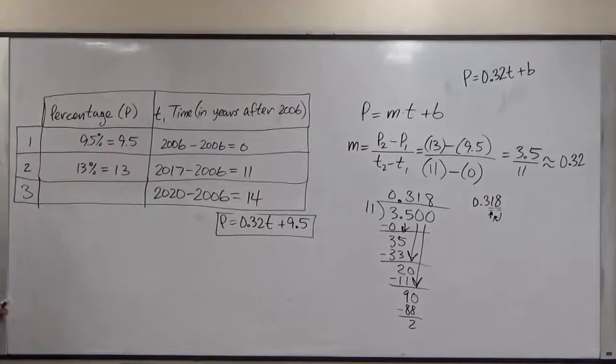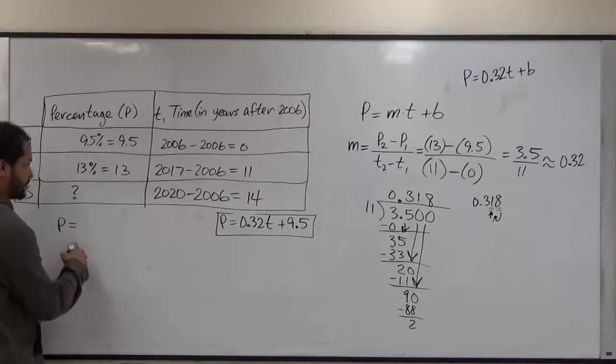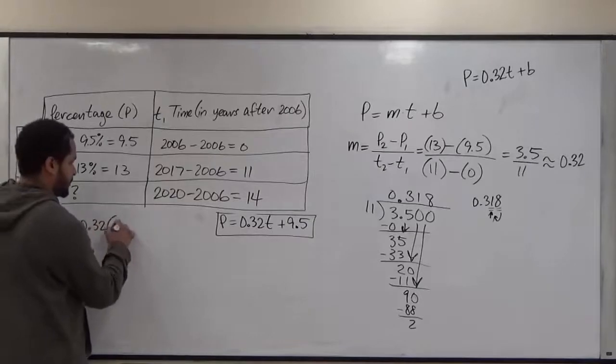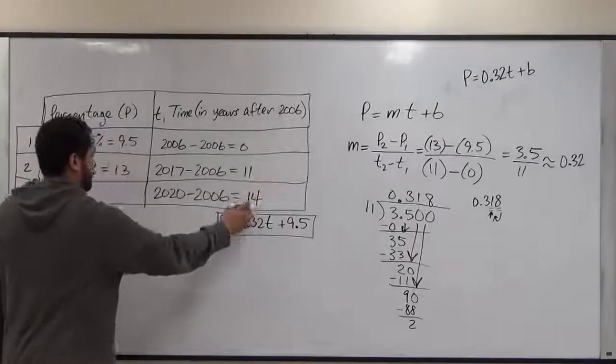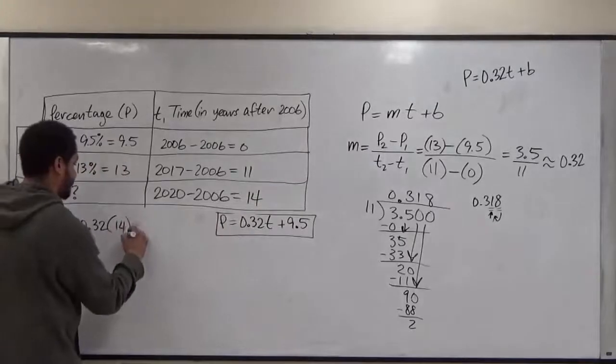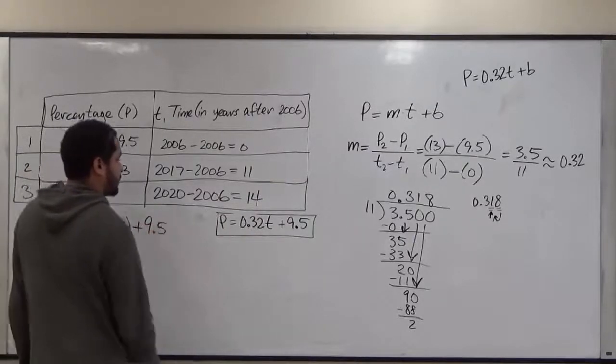Three years after what occurs here, this percent was 13. So we're going to find this percentage. So we're going to say the p-value, which is what we're solving, equals 0.32 times the time in years of t after the year 2006, which is 14 years later, plus the y-intercept value of 9.5.